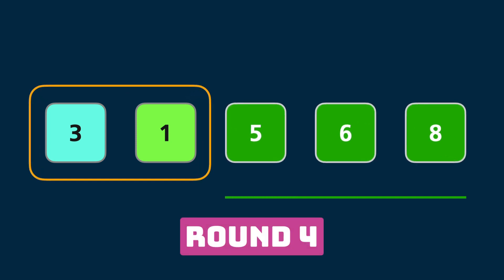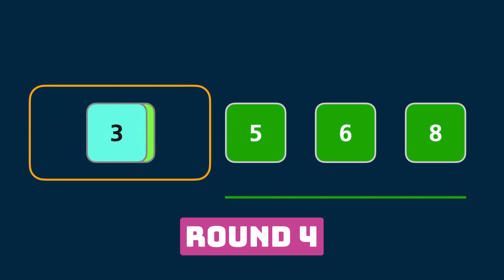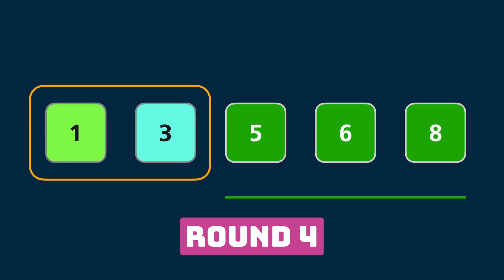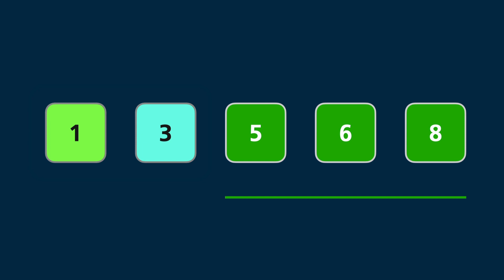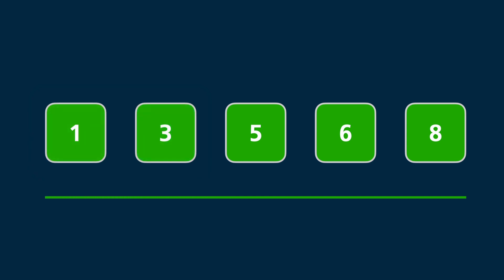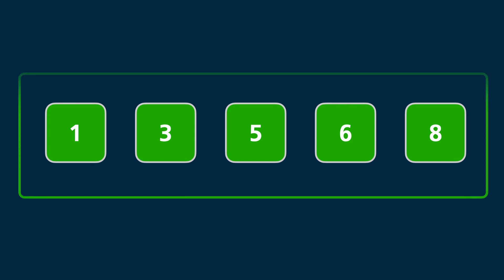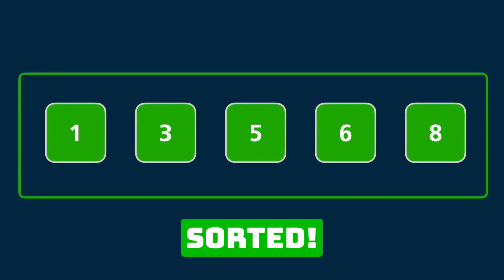Last round, round number four. Three is greater than one, that's why we swap those two elements and round four is over. After this last round all elements are in their correct positions and they were sorted in ascending order from the left side to the right side. But what is the complexity of such algorithm?